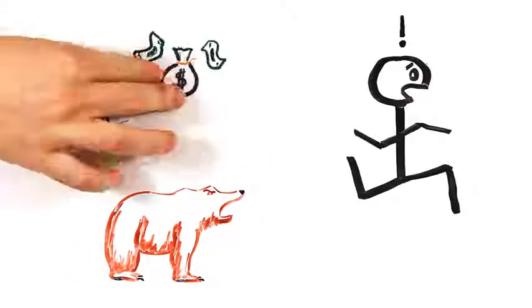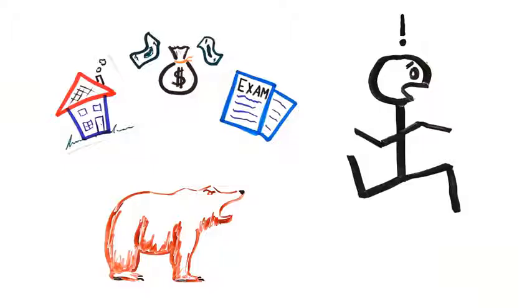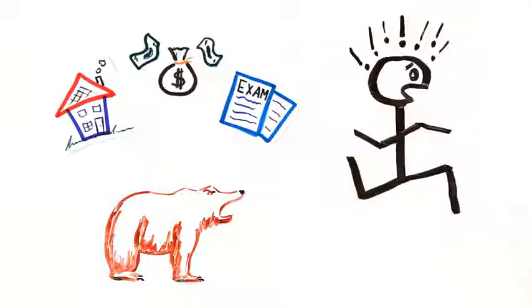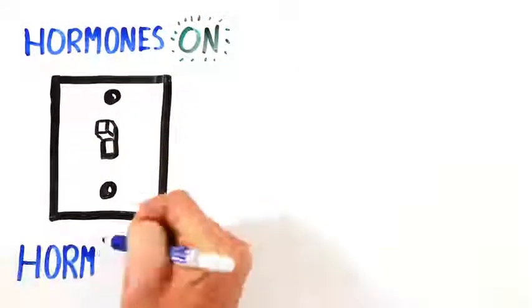But it turns out that your mortgage, unemployment, and looming exam all trigger the same stress response in your body. And unlike most animals, which eventually experience a major decrease in these hormones, humans can't seem to find the off switch.